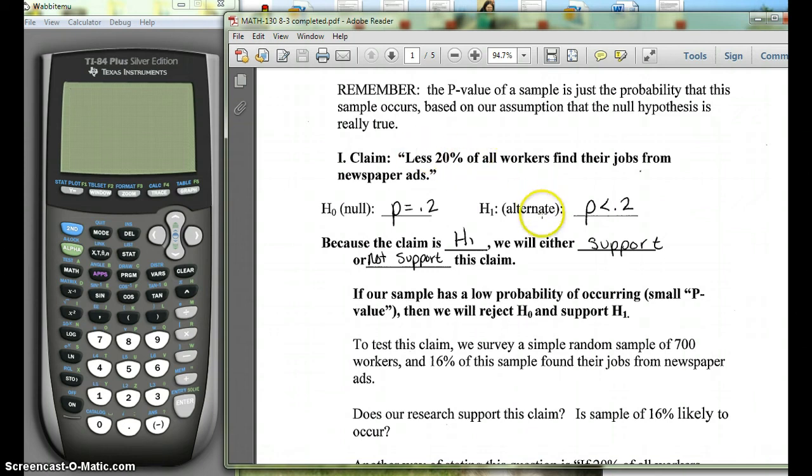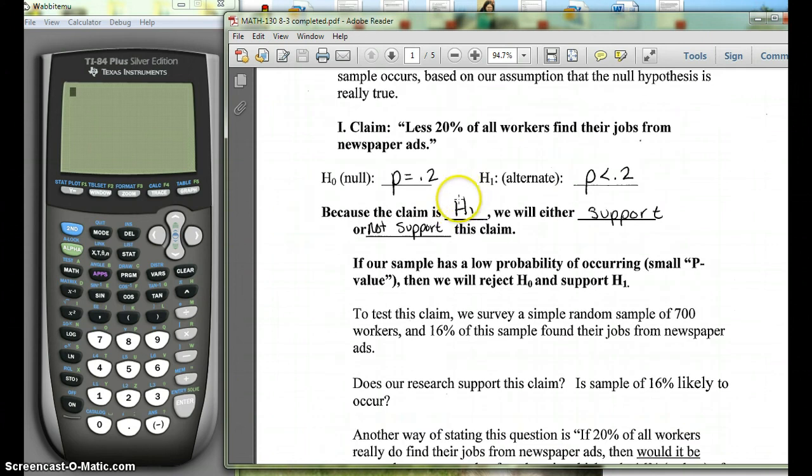Since this is a less than claim, our alternate hypothesis is p < 0.2. This makes our null hypothesis p = 0.2. Now the claim is the alternate hypothesis, the less than, so we either support it or do not support. If our p-value is less than alpha, we will reject the null, which means we'll support. And if it's bigger, then we will not support.